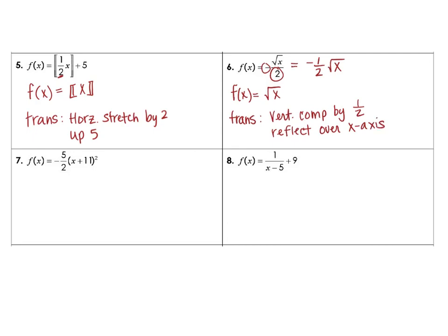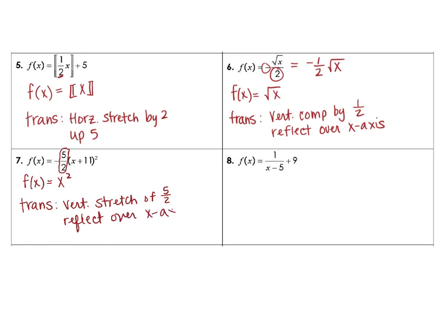Let's look at number 7. Here our parent function is disguised in a lot of mess, but that parent function is x squared. For our transformations, starting out here – you've got that 5 halves on the outside – so this is going to be a vertical stretch, because that is larger than 1, of 5 halves. We are going to reflect over the x-axis, and it looks like we are going to go – not right, sorry – left 11.